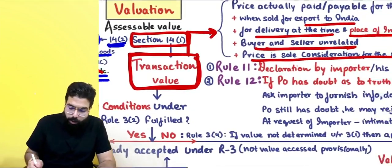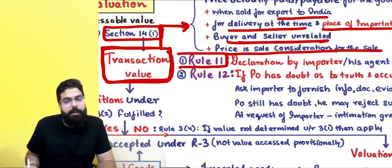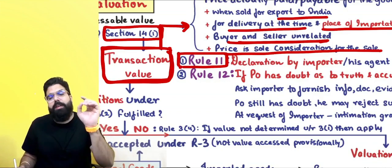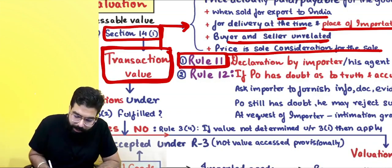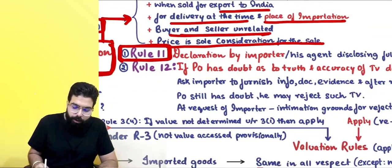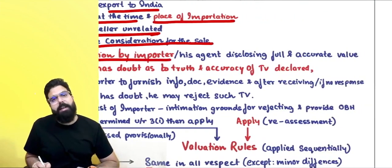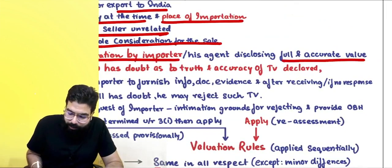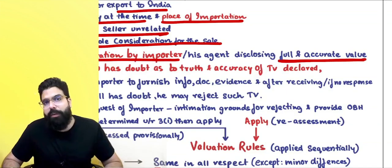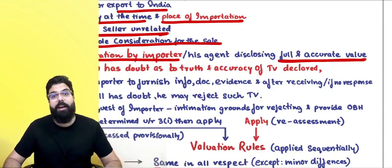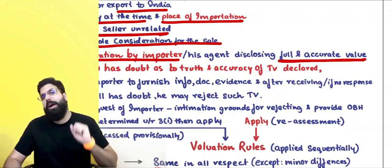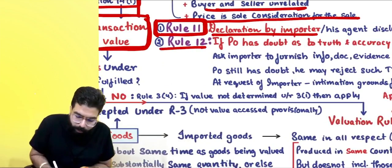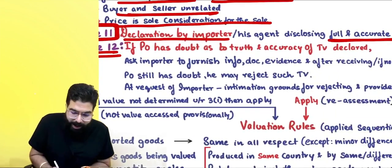Once you know the transaction value, Step 1 is to file a declaration under Rule 11. Rule 11 says you must file a declaration by the importer or his agent about the full and accurate disclosure of the value. When you file your bill of entry, you also give a declaration about the full and accurate value — at what price you imported the goods.